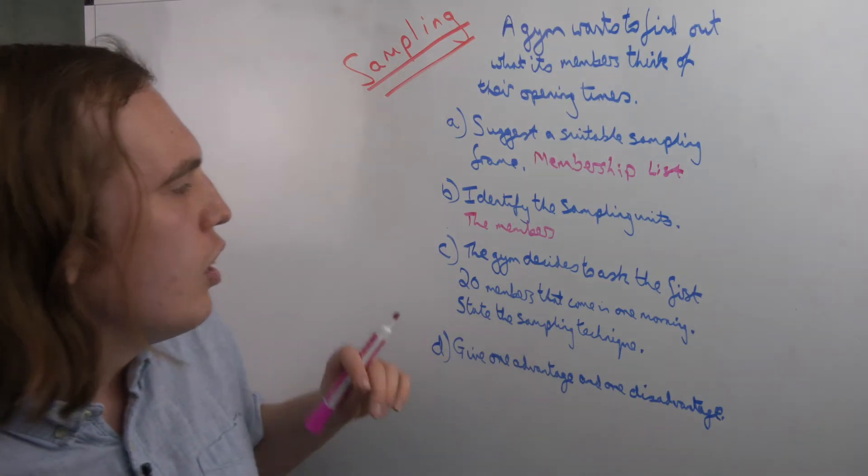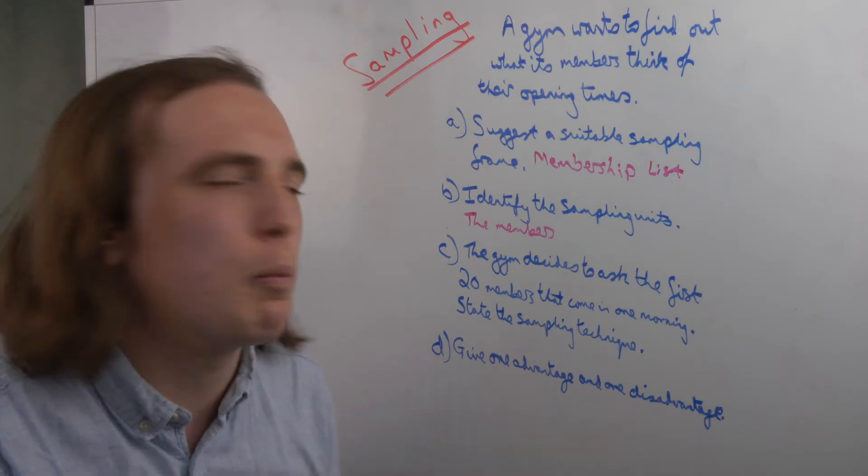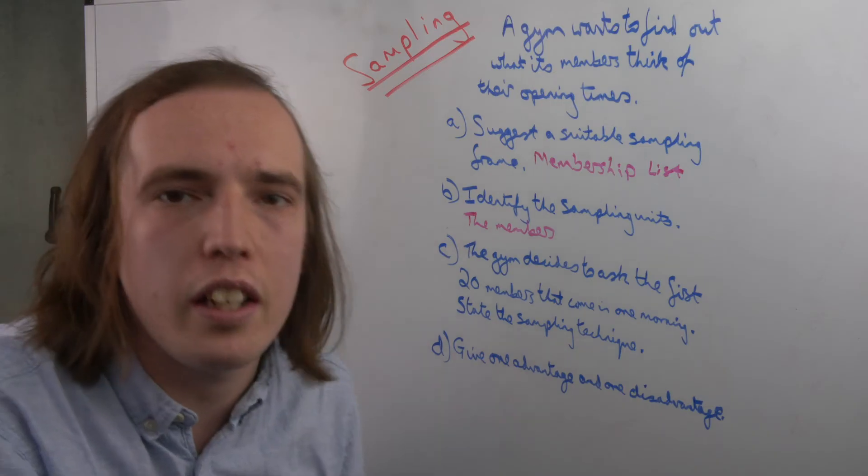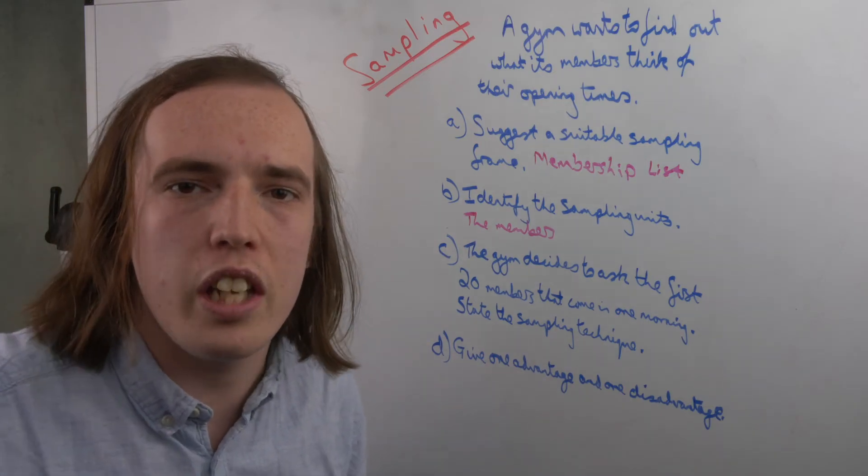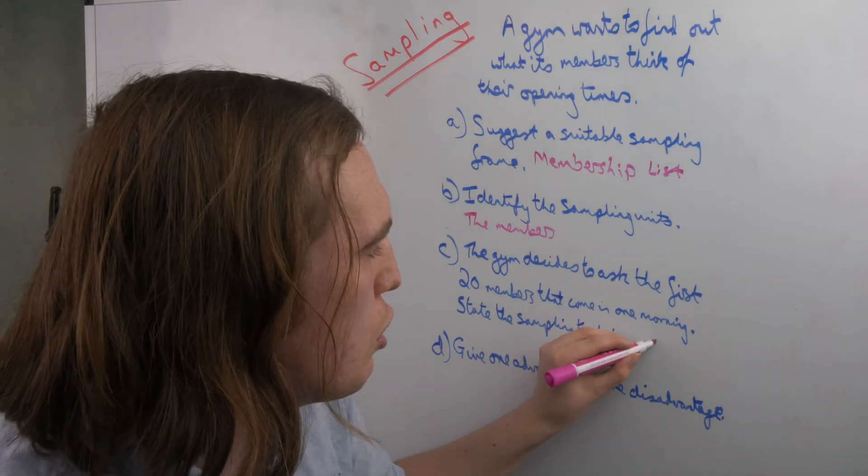For C, it extends the scenario to say the gym decides to ask the first 20 members that come in one morning. And based on this, state the sampling technique. Well, they're asking just the first number of people they come across. So that's going to be opportunity.